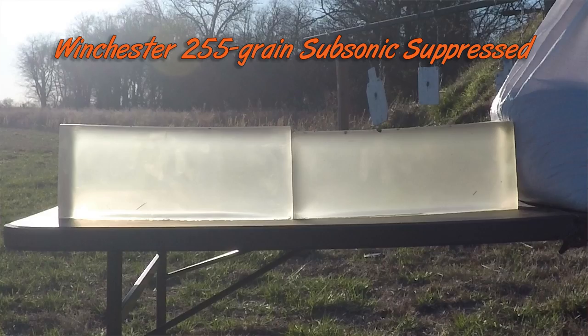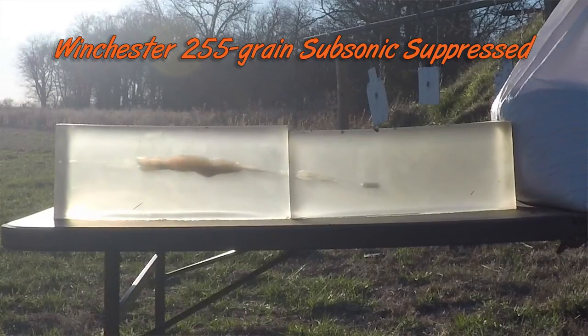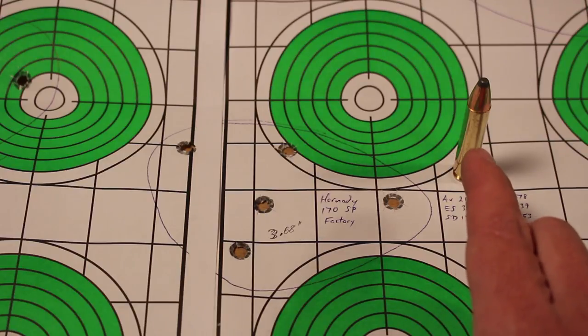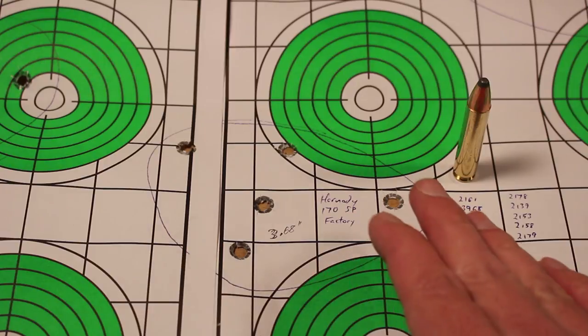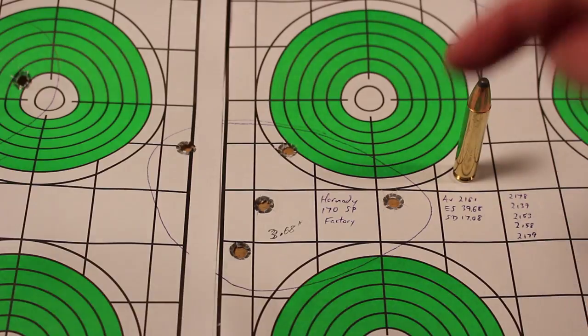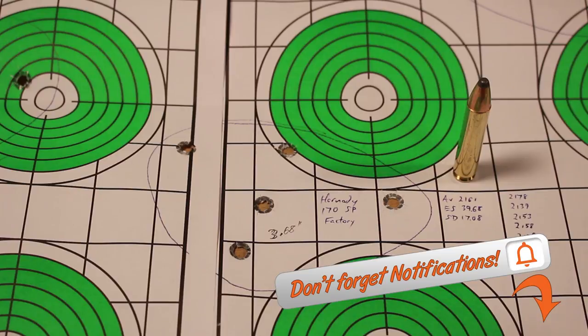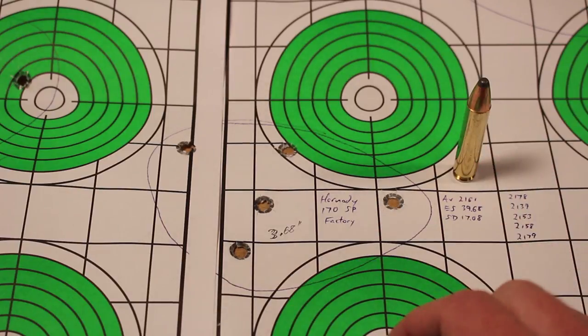Make sure that you stick around and watch for more videos when they come out. We're going to be testing more 350 Legend loads. We're going to be doing 5.7 by 28, 6.5 Creedmoor, 243 Winchester. We're going to be testing them in gel. We're going to be testing them on paper. And we might be doing some things like hitting eggs with some of these. It's going to be a whole lot of fun. Make sure that you subscribe and hit that notification bell down below. That's your best shot to be able to see when new videos come out.